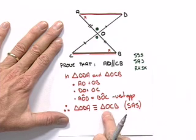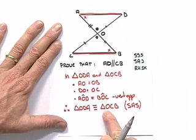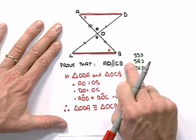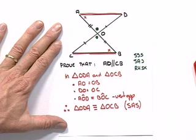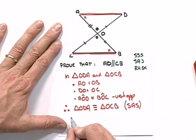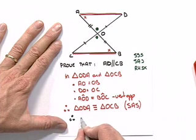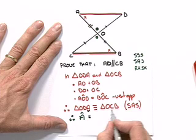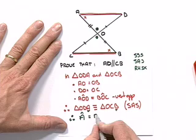Now remember, we proved congruency not for the sake of congruency but so that we could make a conclusion and use that conclusion to prove this point. What's the conclusion we want to make? Therefore, angle A, which is the third letter there, is equal to the third letter angle B.